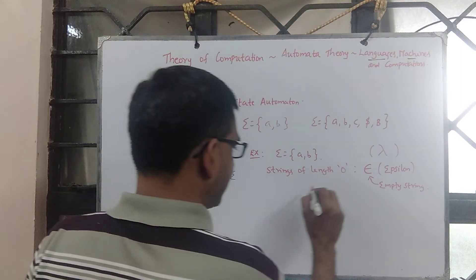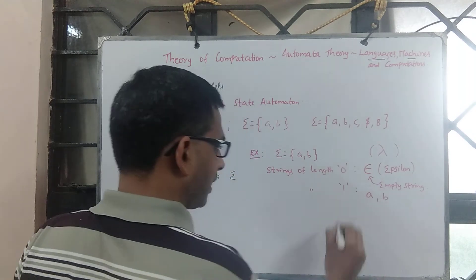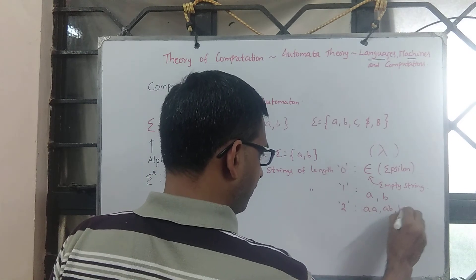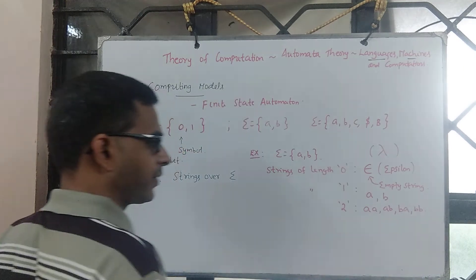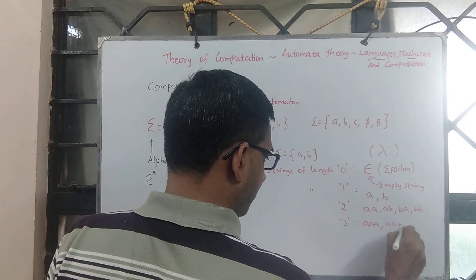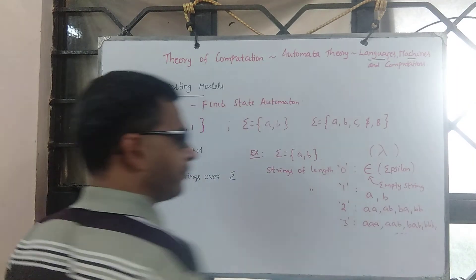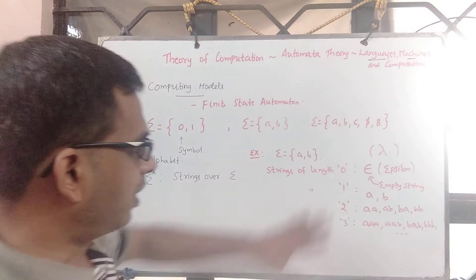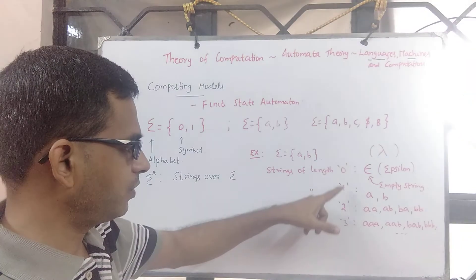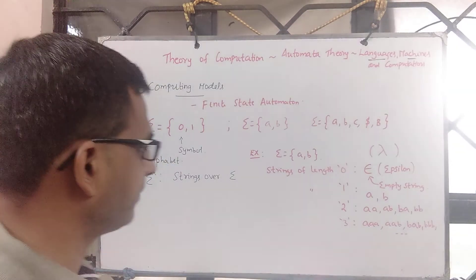Strings of length 1 are: a and b. Strings of length 2 are: aa, ab, ba, bb. Strings of length 3 are: aaa, aab, bab, and so on. All of this is part of sigma star. You will find strings of length 0, 1, 2, 3, 4, and if you ask for strings of length k, all of them will be present here.